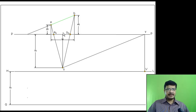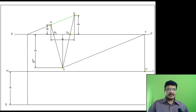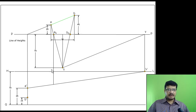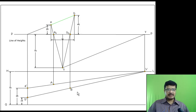Next, find the line of heights. To get the line of heights, extend the given line until it intersects the picture plane, and from that intersection point drop a vertical — this line is called the line of heights. On this line, mark the height of each point: point A height is 35mm, marked as A dash; point B height is 15mm, marked as B dash. From A dash, draw a line to the vanishing point capital V, then from A1 drop a projector — this intersection point is capital A. From B dash, draw a line to capital V, then from B1 drop a projector — this intersection point is capital B. The line joining capital A and capital B is the perspective projection of the given line. This is the vanishing point method.